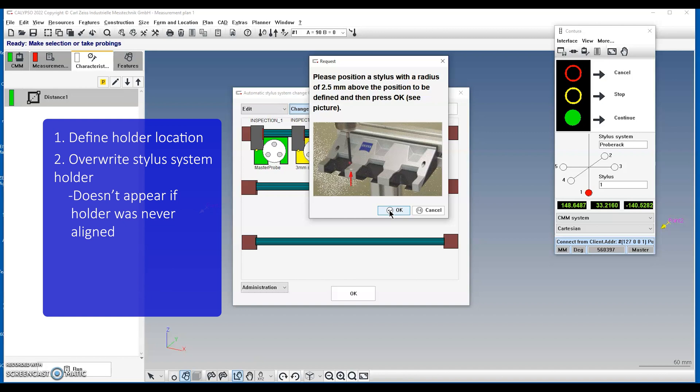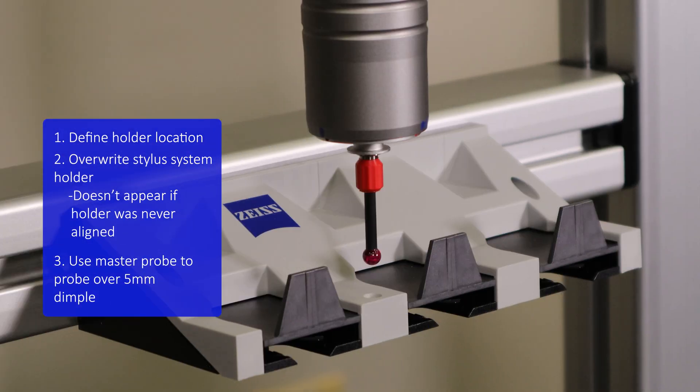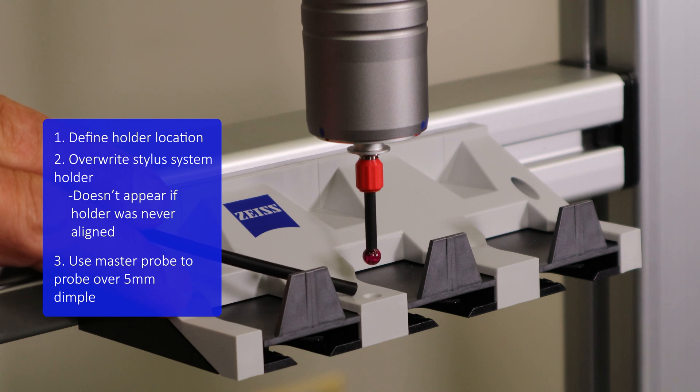Once you've clicked on that, use the master probe to probe over a dimple that's approximately five millimeters.